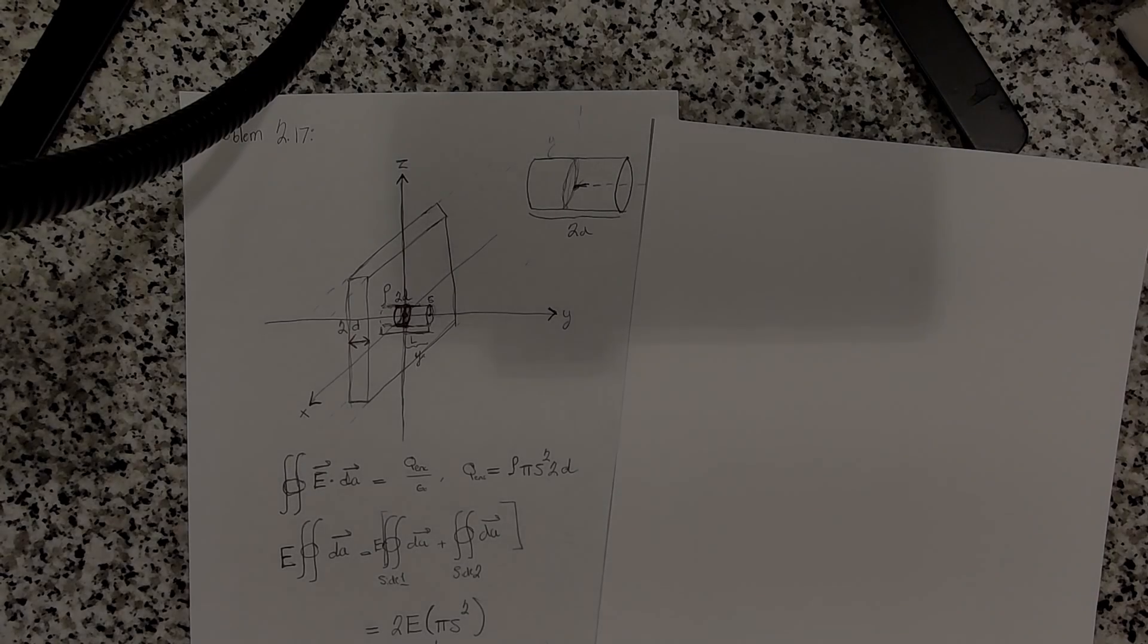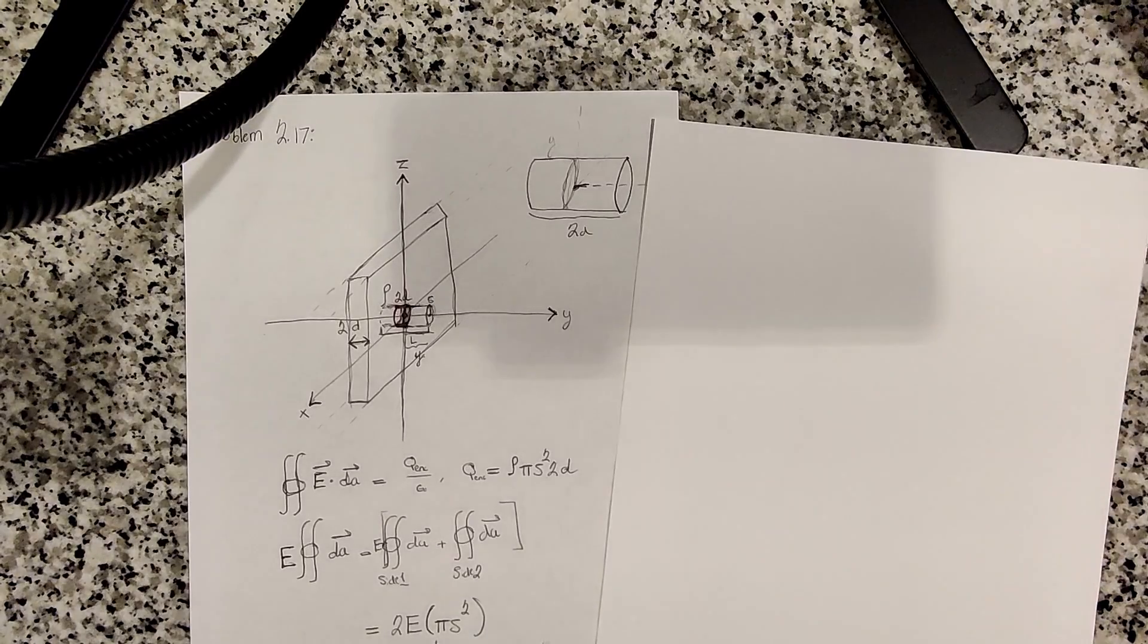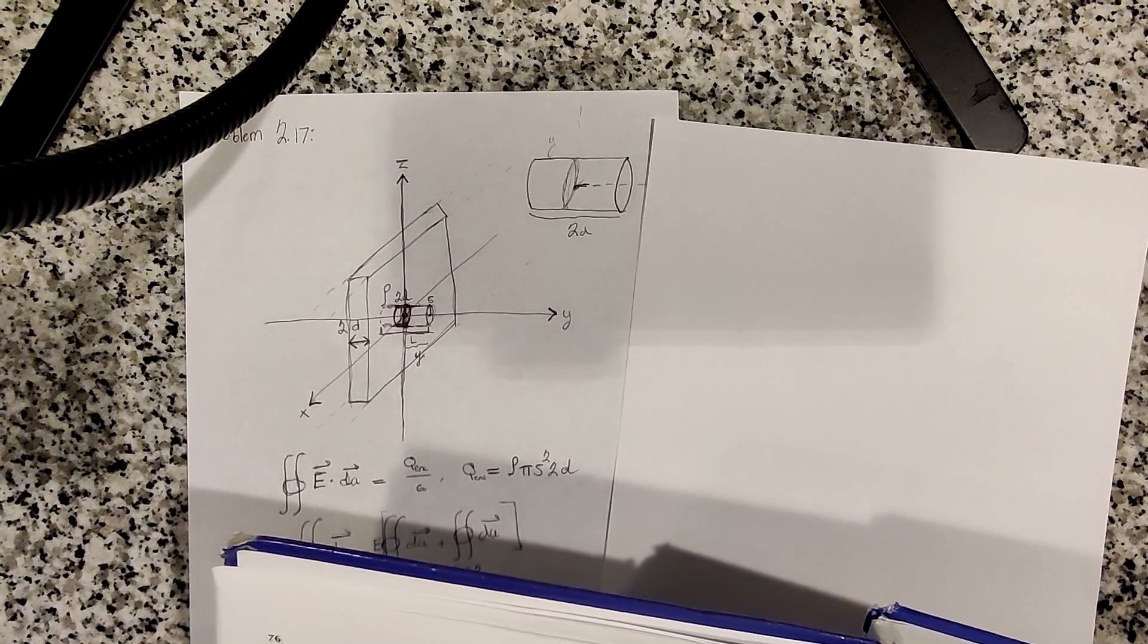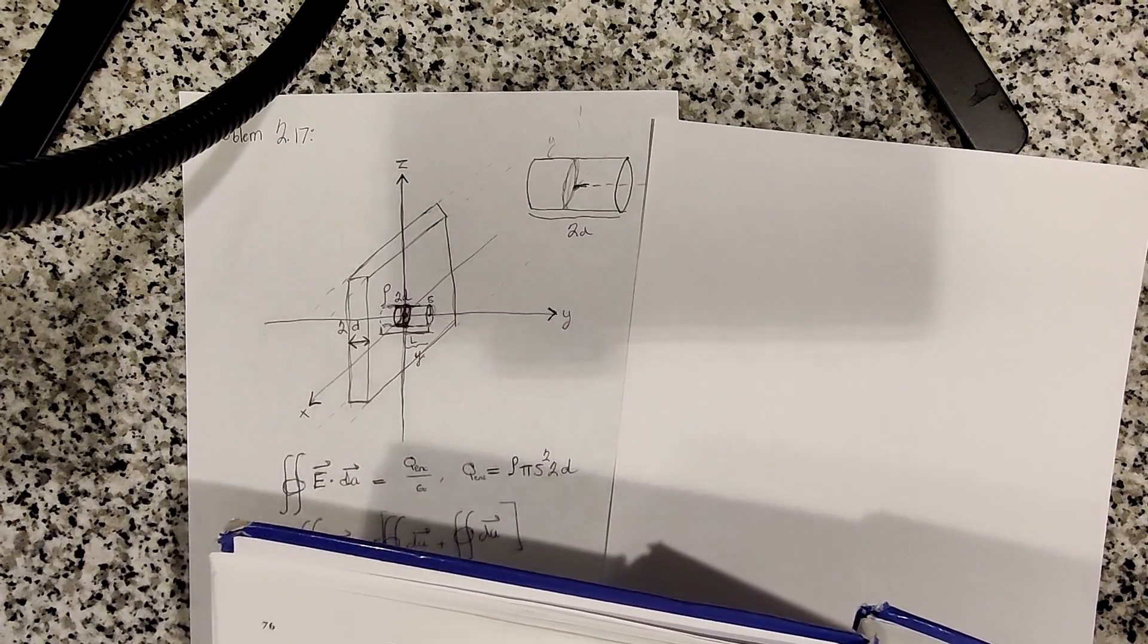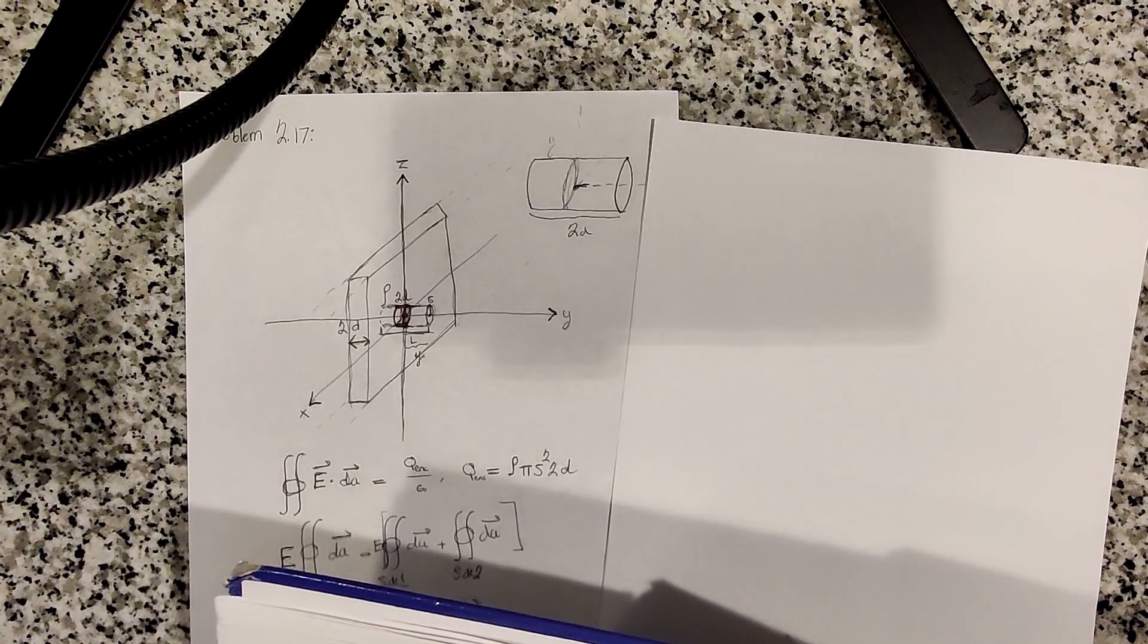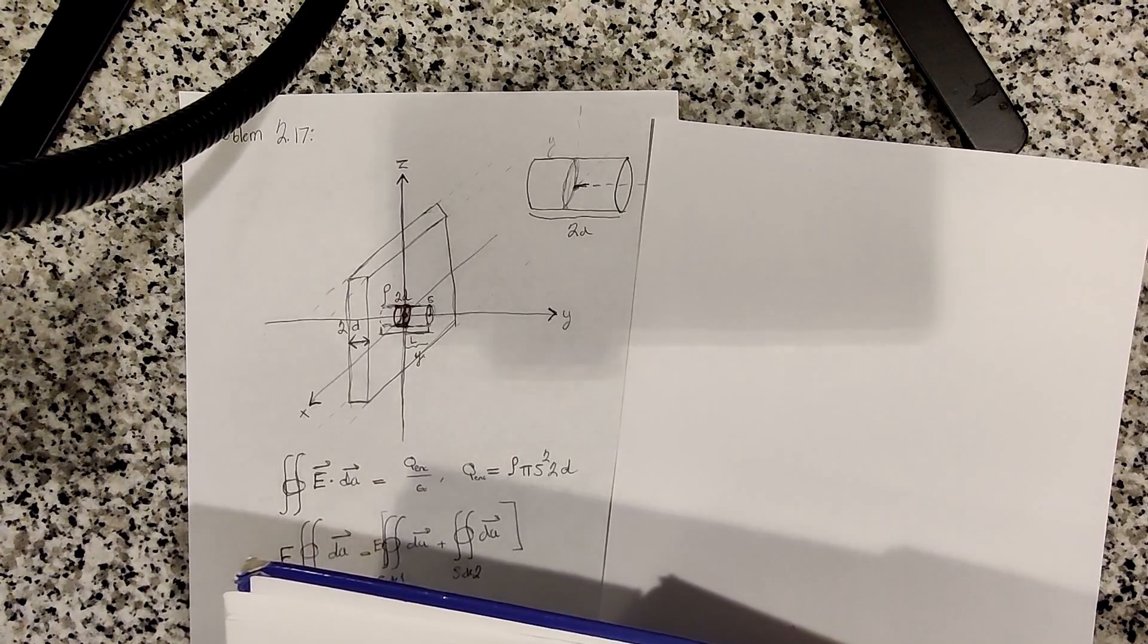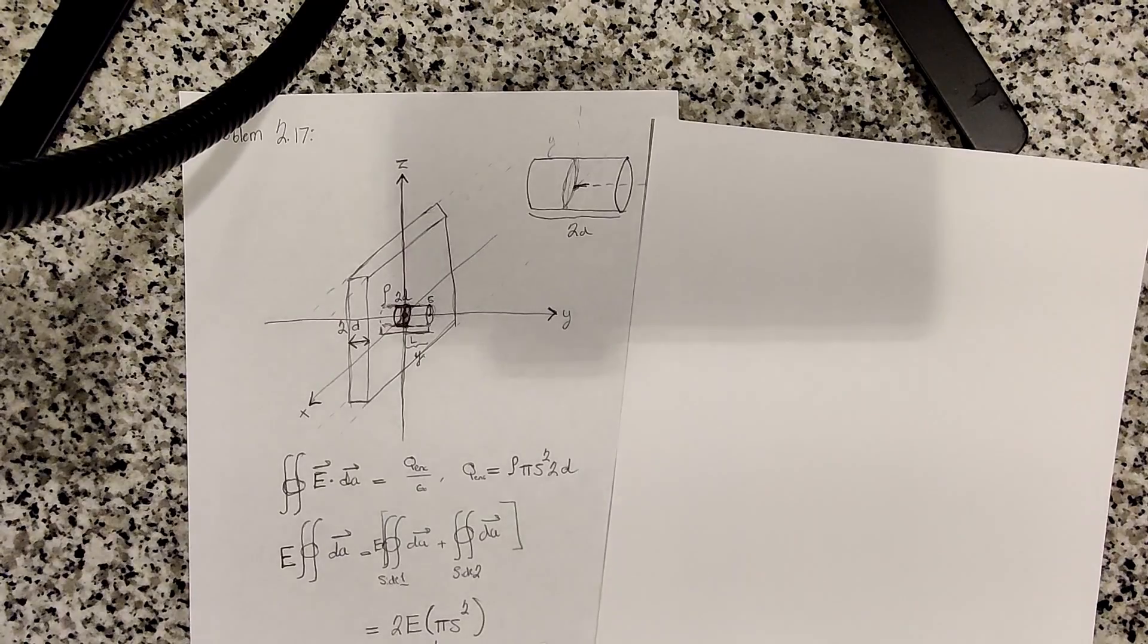Hello, everyone. Welcome to problem 2.17 of David Griffith's Electrodynamics. The problem statement says: an infinite plane slab of thickness 2D carries a uniform charge density of rho. Find the electric field as a function of y, where y equals 0 at the center, and then plot the electric field versus y, calling the electric field positive when it points in the plus y direction, and negative when it points in the minus y direction.